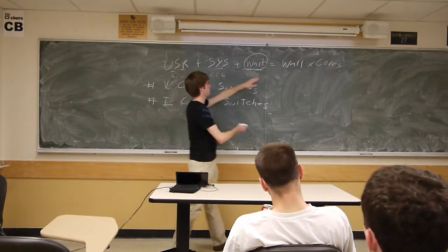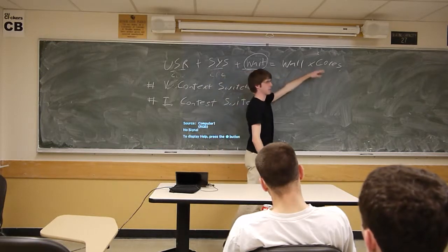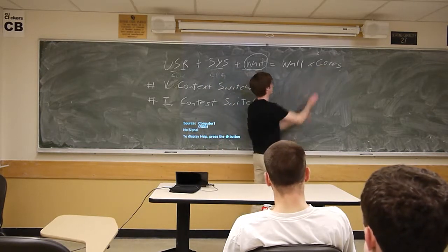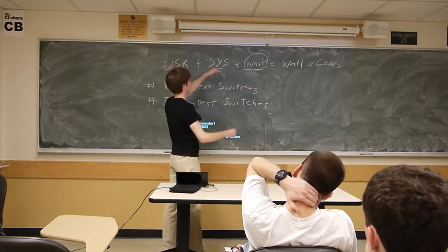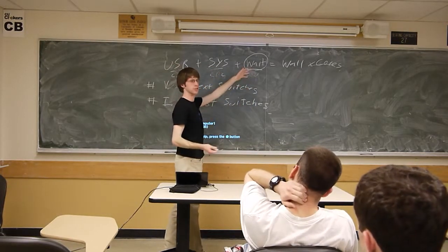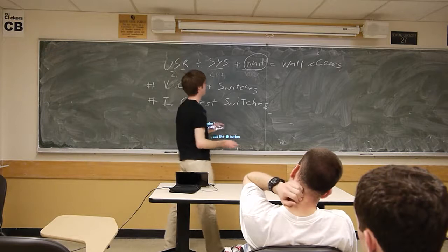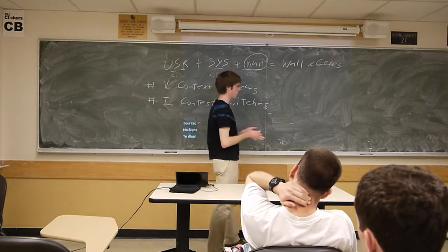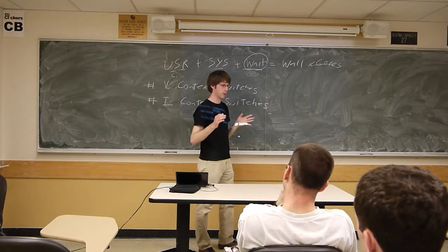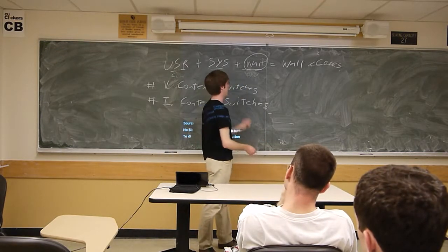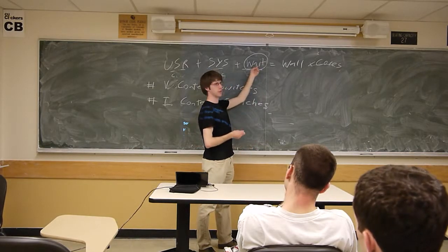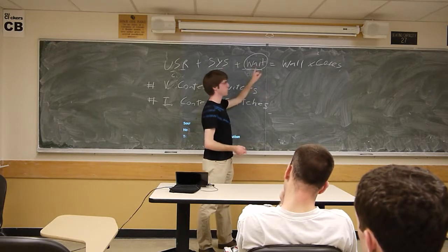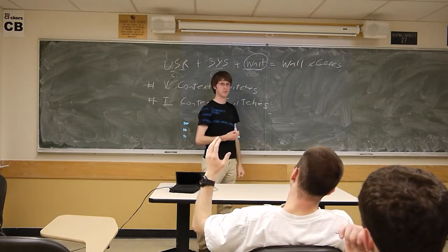One way to handle this: if you have two cores, double your wall clock time, then use that when subtracting user and system time to calculate your wait time. Alternatively, you can divide user and system time by the number of cores. Either way, realize that if you're on a multi-core system running multiple processes, you have to take that into account when calculating wait time — otherwise your subtractions will give you negative numbers.